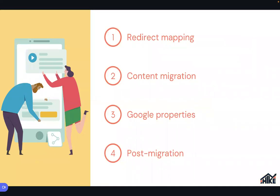There are four parts to a migration. First: redirect mapping. Second: content migration. Third: Google properties — what to do there. And fourth: what to do after the website's gone live. You can't just say 'my work here is done' — you need to do certain audits to make sure you've maintained your SEO traffic.